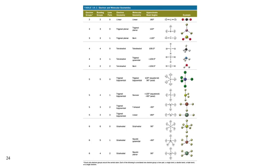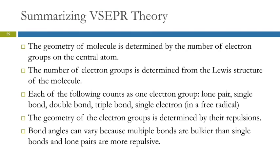Here's a table from your book summarizing all of that information. Summarizing VSEPR theory: Geometry is determined by the number of electron groups. You get the number of electron groups by looking at the Lewis structure. What is a group? It's a lone pair, a single bond, a double bond, a triple bond, or a single electron. We think about the electron groups repelling each other, trying to spread out. The bond angles can vary because multiple bonds are bulkier than single bonds. Lone pairs are more repulsive than bonding pairs.